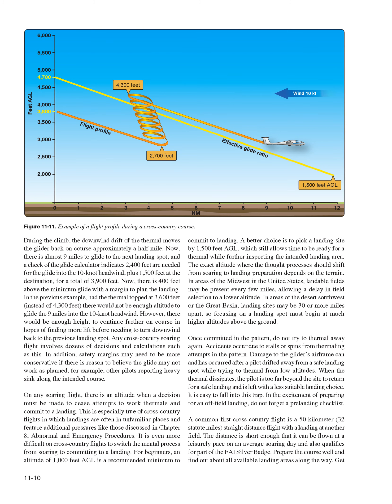The exact altitude where thought processes should shift from soaring to landing preparation depends on terrain. In the Midwest, landable fields may be present every few miles, allowing a delay in field selection to a lower altitude. In the desert southwest or Great Basin, landing sites may be 30 or more miles apart, so focusing on a landing spot must begin at much higher altitudes. Once committed in the pattern, do not try to thermal away again—accidents occur due to stalls or spins from thermaling attempts in the pattern.